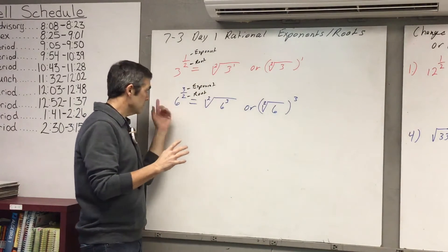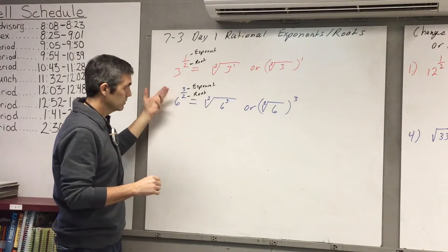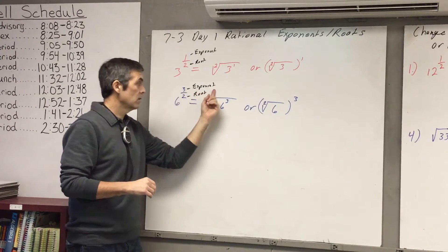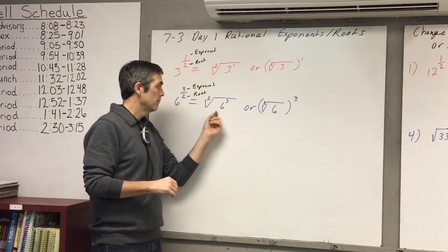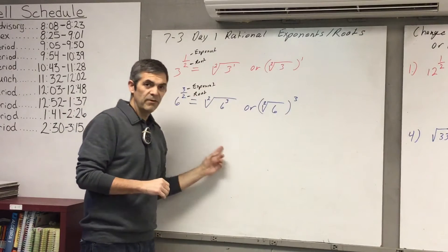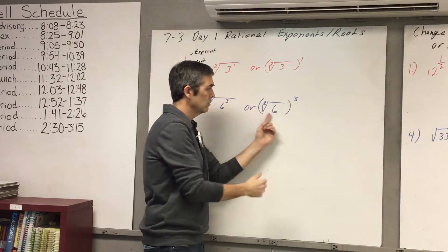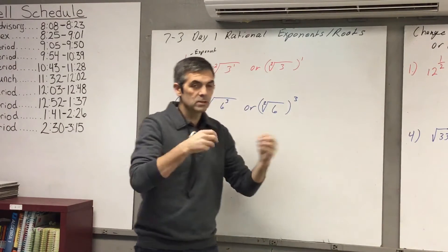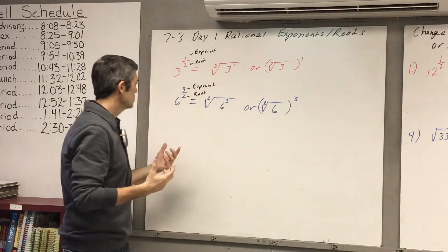Here's another way: 6 raised to three-halves — three over two. The 2 is our root and the 3 is our exponent. So you take the square root of 6 raised to the third power. Or you can say the square root of 6 all raised to the third power. Mathematically it ends up being the same thing when you solve it out.